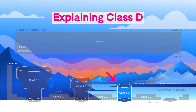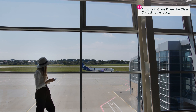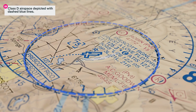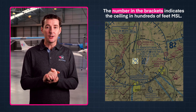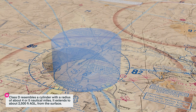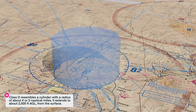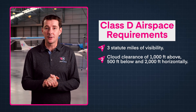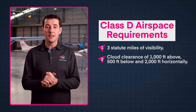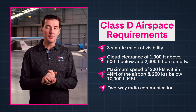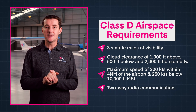Up next is Class D airspace. Airports in Class D are very much like Class C, just not as busy. On the sectional, Class D airports are depicted with a dashed blue line. The number in the bracket indicates the ceiling in hundreds of feet MSL. Class D resembles a cylinder with a radius of about 4 to 5 nautical miles, starting from the surface and generally extending to 2,500 feet AGL. The VFR weather minimums are the same as Class C: 3 statute mile visibility, 1,000 feet above, 500 feet below, and 2,000 feet horizontally from clouds. The speed limit is 200 knots, and you must establish two-way radio communication with ATC before you enter.